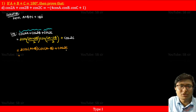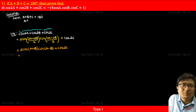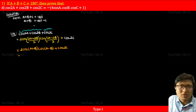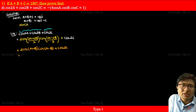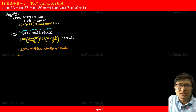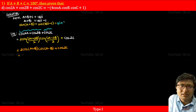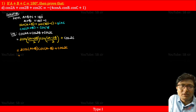So we have 2 cos(A+B) cos(A-B) plus cos2C. Now, since A plus B plus C equals 180 degrees, we have A plus B equals 180 degrees minus C. Taking cosine on both sides, cos(A+B) equals cos(180 degrees minus C), and by the formula cos(180° minus θ) equals minus cosθ, so cos(A+B) equals minus cosC.